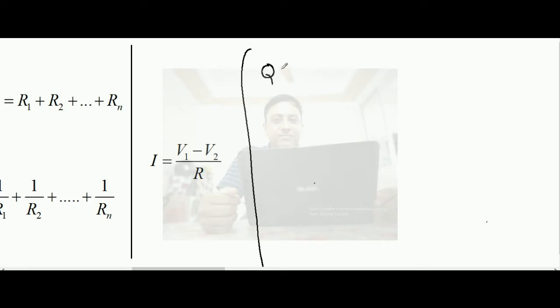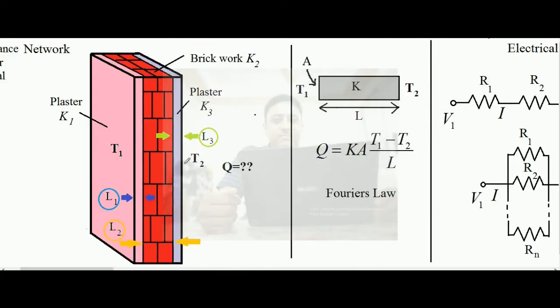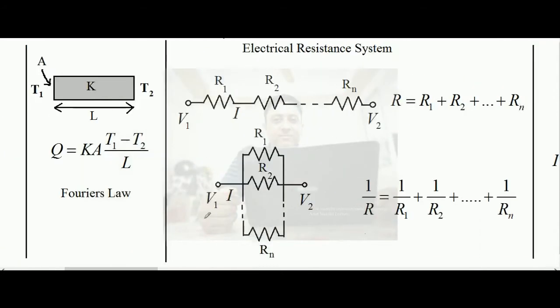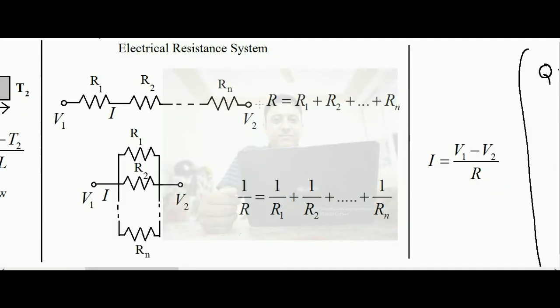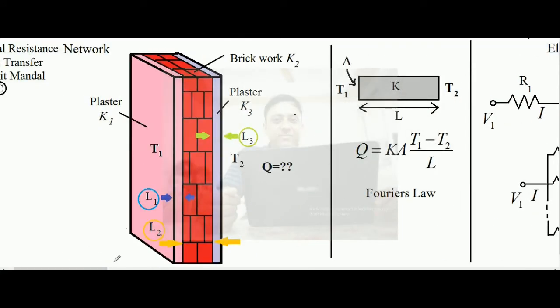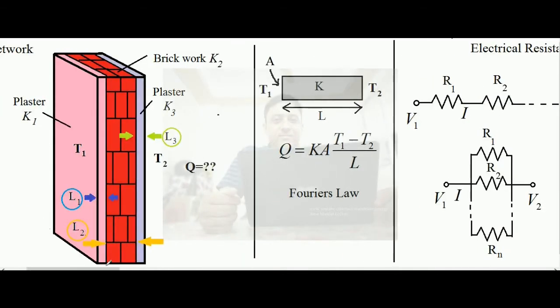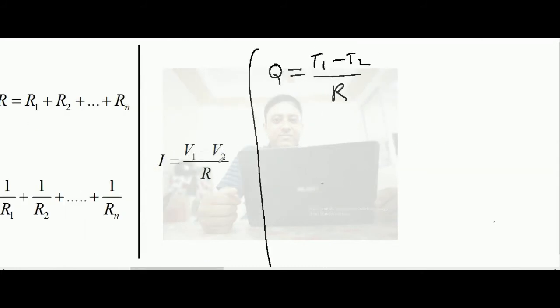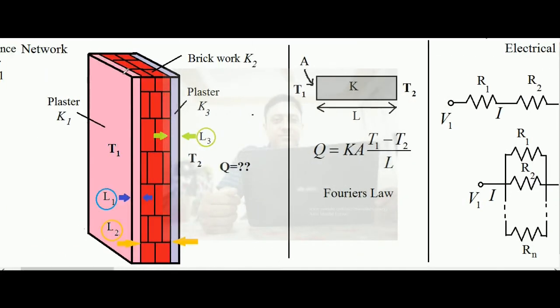By analogy, just as i equals (v1 − v2)/R, the heat transfer rate q equals (t1 − t2)/R, where R is the effective thermal resistance. The temperature difference t1 − t2 is the thermal potential difference — the driving factor for heat flow — just as electric potential difference drives charge flow.